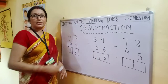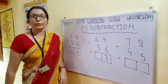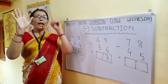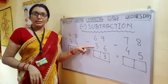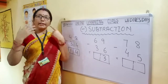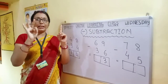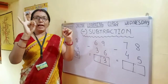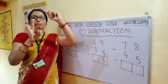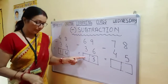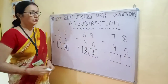The second number is 6. Take out your 6 fingers — 5 fingers and 1 finger. This number is 3 — take away 3 fingers: 1, 2, 3. How many are left? 1, 2, 3. The answer is 3. Write down 3.